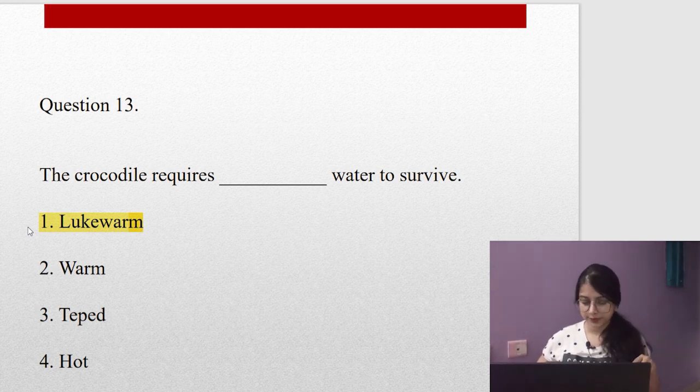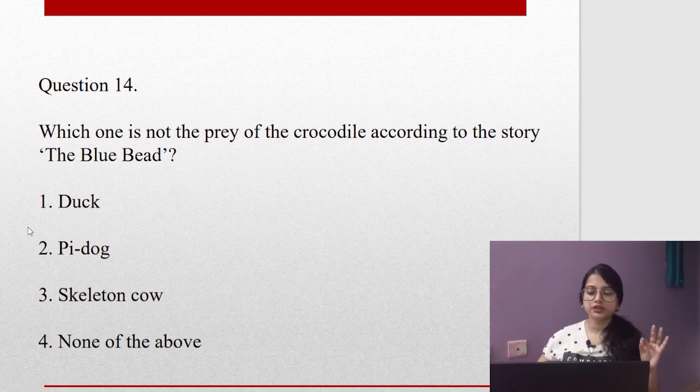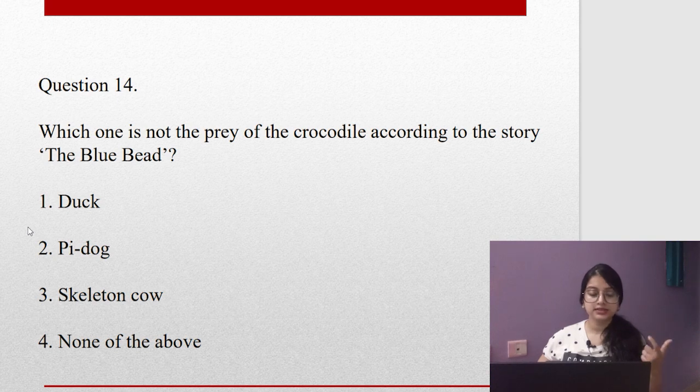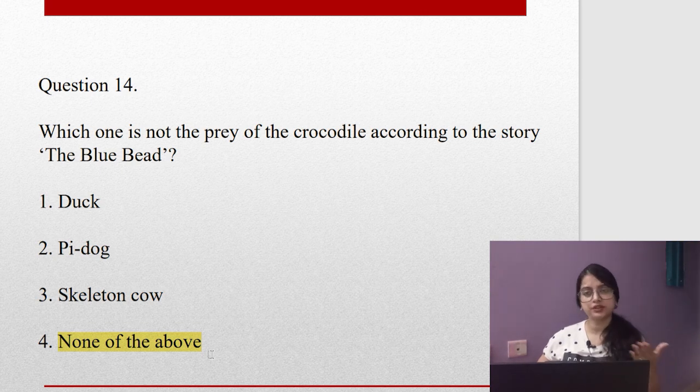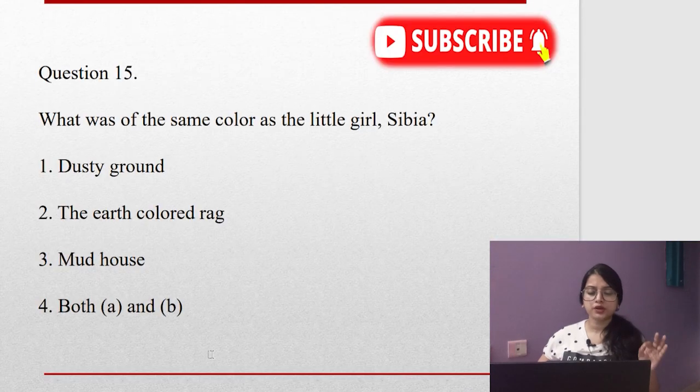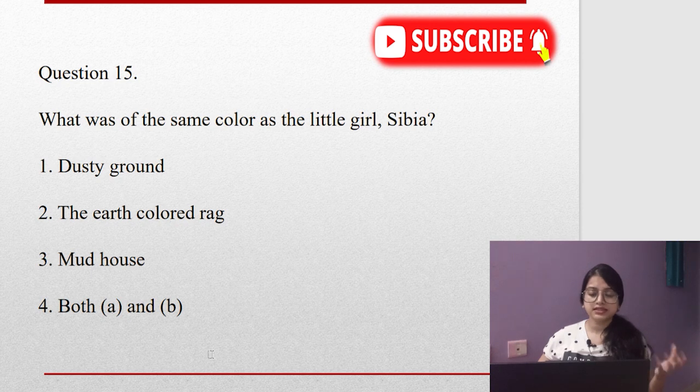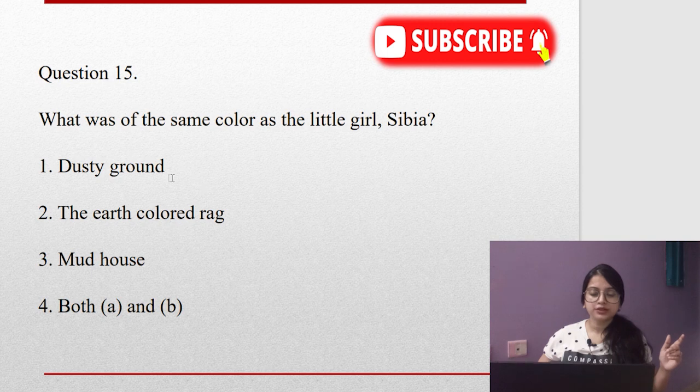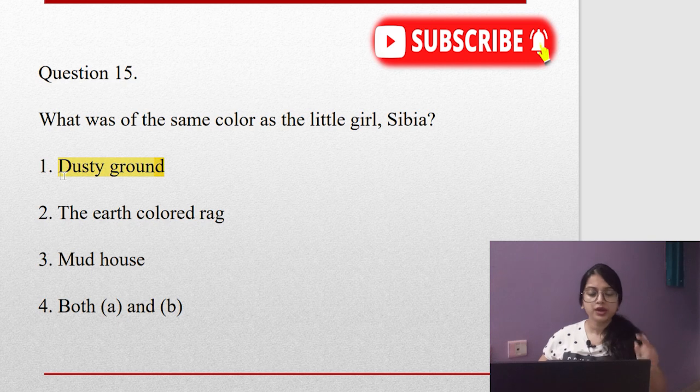Question number fourteen: Which one is NOT the prey of the crocodile according to the story The Blue Bead? Is it a duck, the pie dog, the skeleton cow, or none of the above? It is none of the above because pie dog, duck, skeleton cow, all are prey of the crocodiles. Question fifteen: What was of the same color as little girl Sibia? Is it the dusty ground, the earth-colored rag, the mud house, or both A and B? Dusty ground is also the same color, earth-colored rag is also the same color of the mud house, brown and same as Sibia's skin color. But as is written in the book directly, it is the dusty ground.